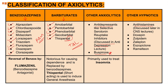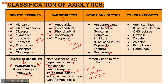All benzodiazepines are reversible. If a patient has too much CNS, CVS, and respiratory suppression, we use flumazenil — an antagonist and the official reversal agent for benzodiazepines. Barbiturates are notorious for causing dependence and have largely been replaced by benzodiazepines. However, thiopental — an ultra-short-acting barbiturate — is still used to induce general anesthesia. Due to higher toxicity, dependence, and tolerance, barbiturates are not ideal drugs.